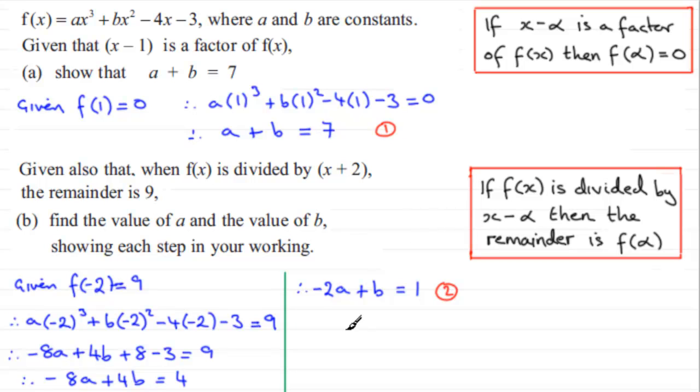If we put down here 1 minus 2, what does it give us? We've got a minus minus 2a, which is a plus 2a, in other words 3a. We've got b minus b so that's gone. And we've got 7 take away 1 which is 6. If we divide both sides by 3, a will equal 2.